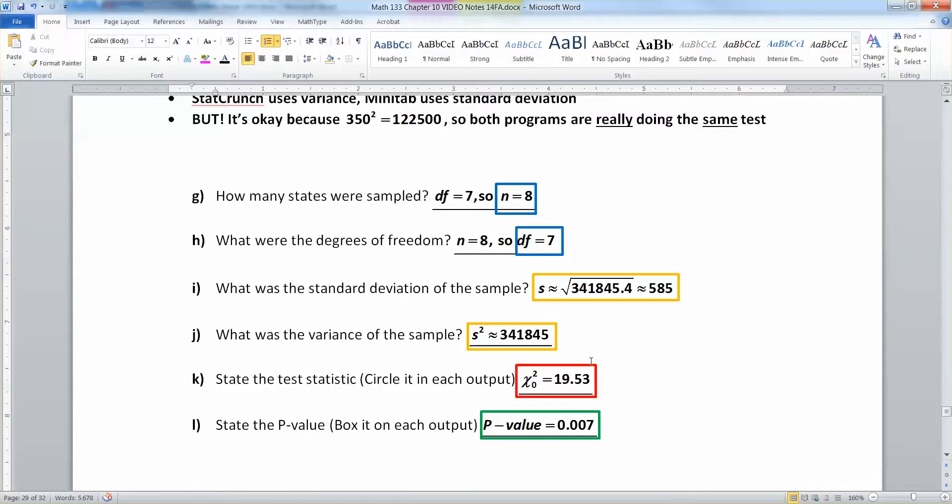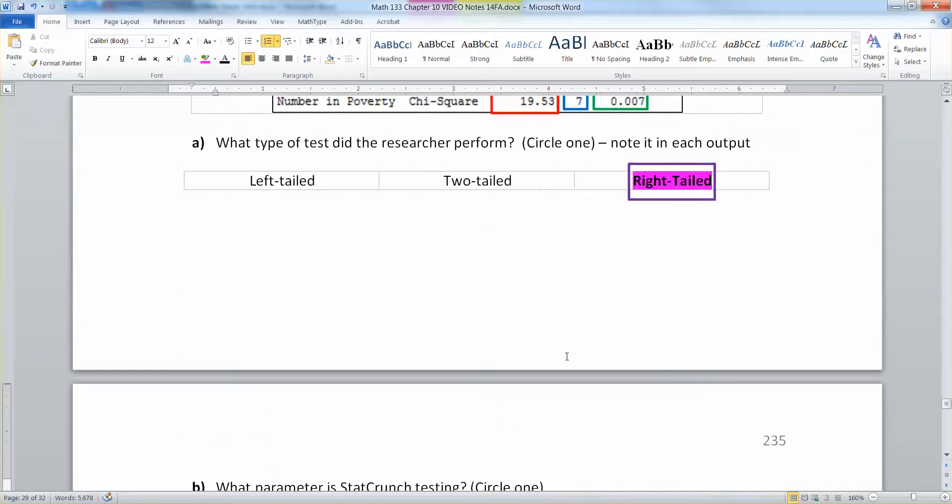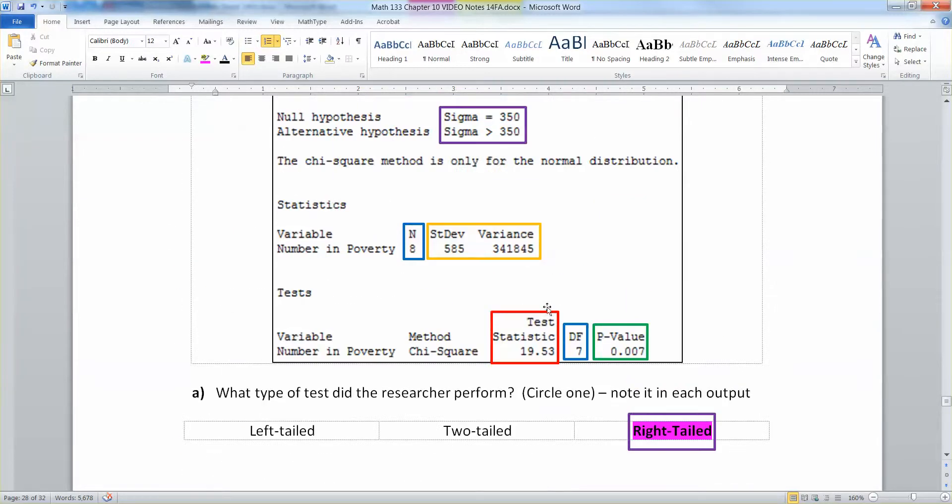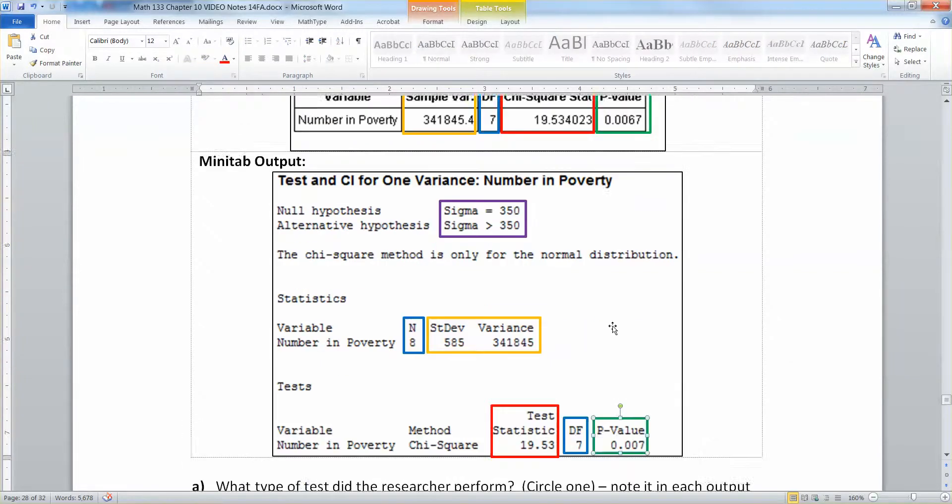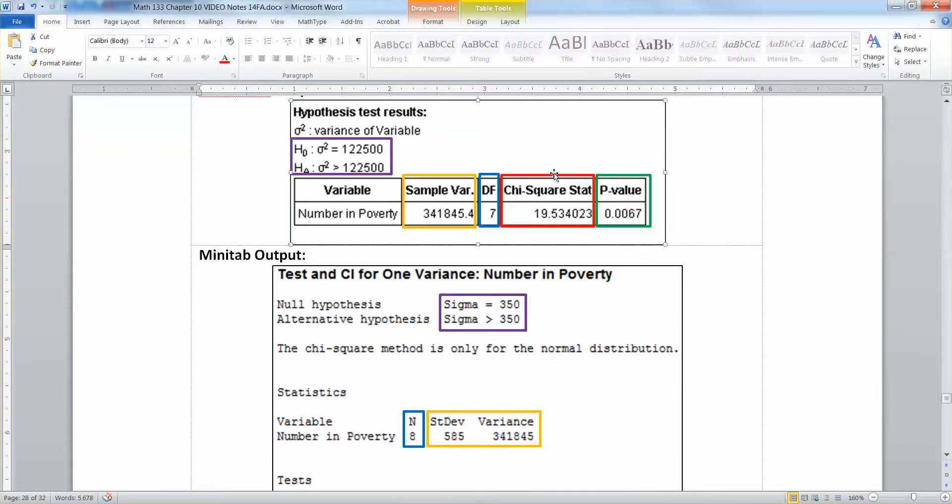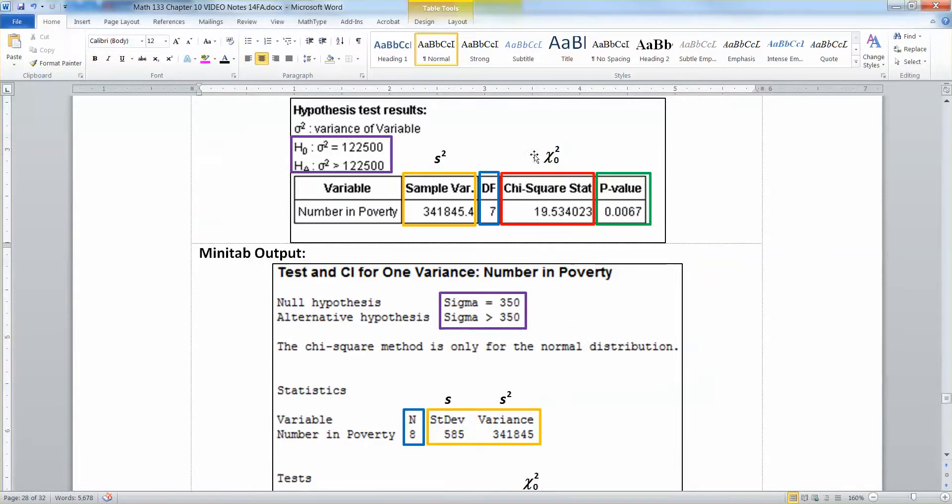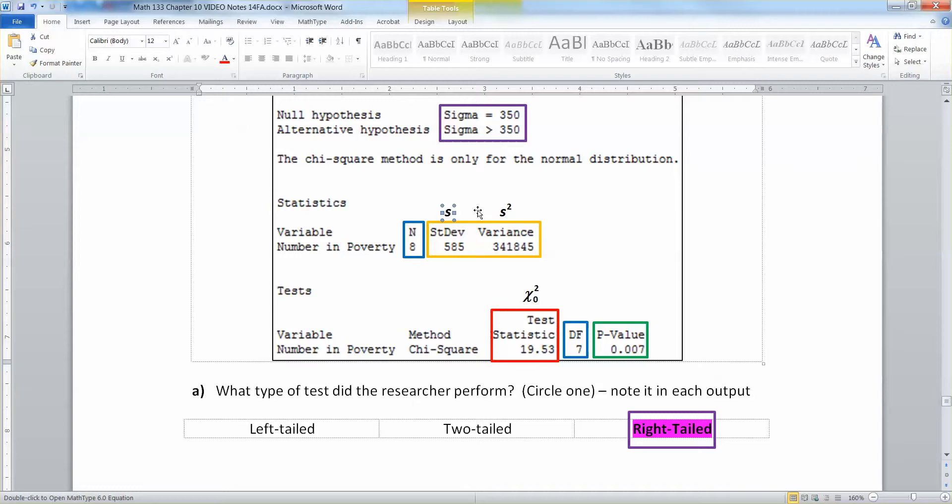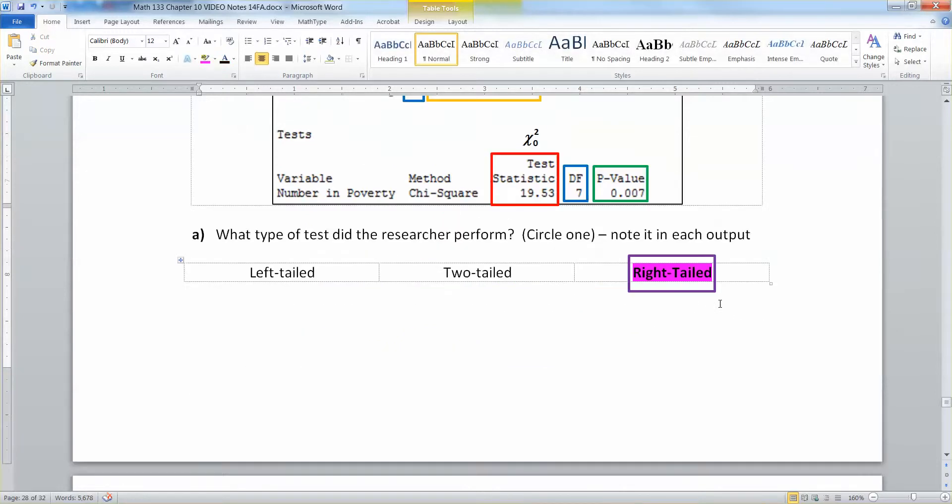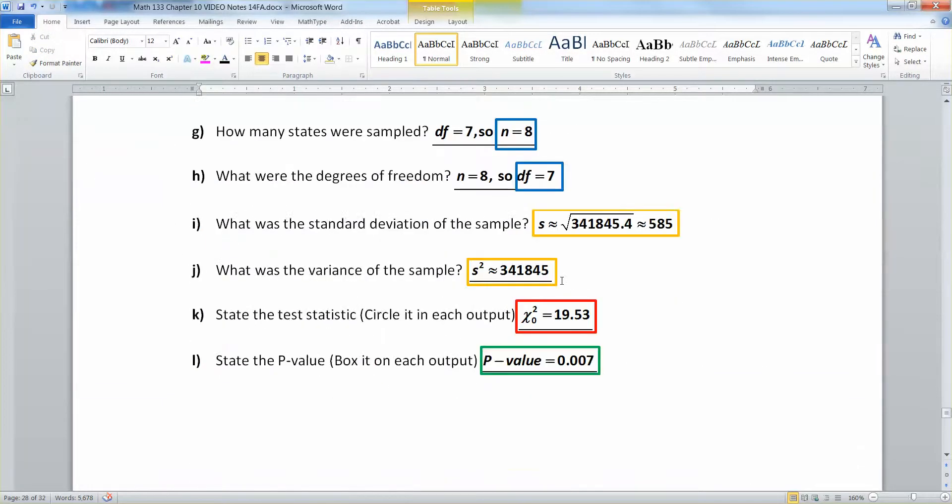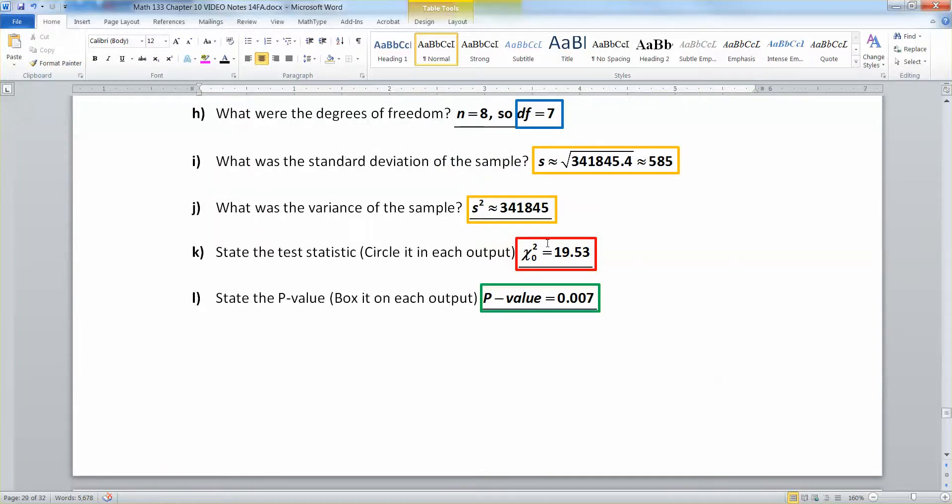Now, the test statistic and the p-value go hand in hand. Test statistic right here, chi-zero-squared, there it is. And then the p-value is right there. And then here you can see the test statistic is right there, the chi-square stat and the p-value. Let me give those two a couple labels. This is the chi-zero-squared stat right there. And then this is s-squared, your sample variance. So your chi-zero-squared is your test statistic. And your p-value is 0.007.